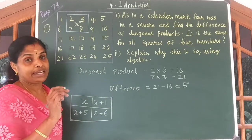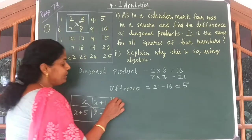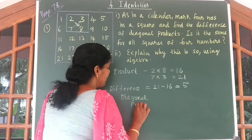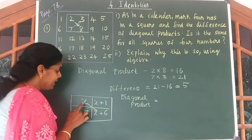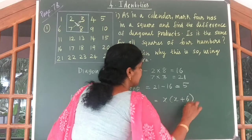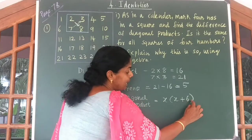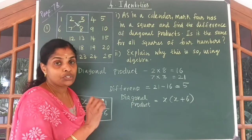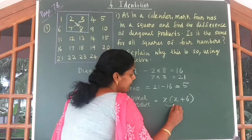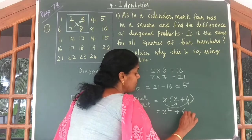Now here we are going to find the diagonal product. So let us multiply these 2. Diagonal products: you have to multiply x into x plus 6. So when you multiply x into x plus 6, we know the first identity: k into (a plus b) is equal to k into a plus k into b. So we use that idea here. x into x gives you x squared, x into 6 gives you 6x.